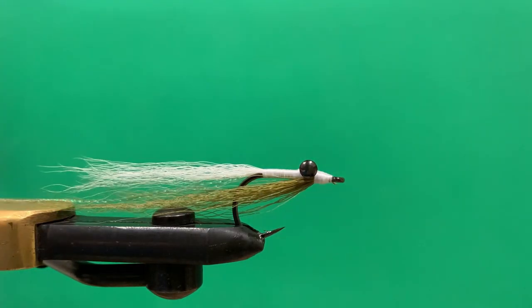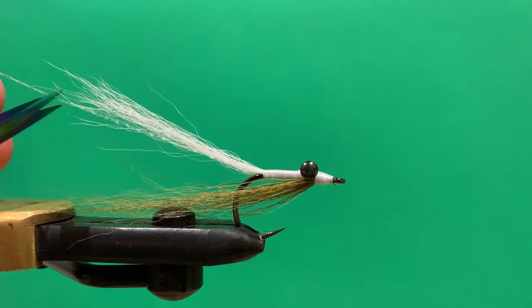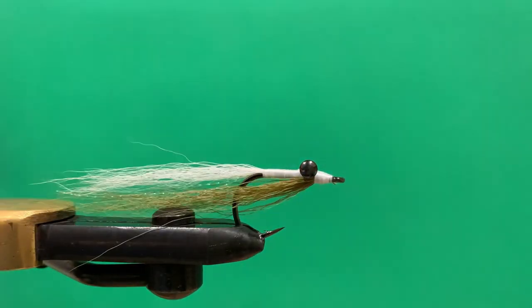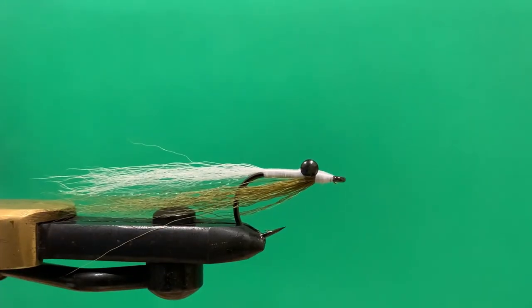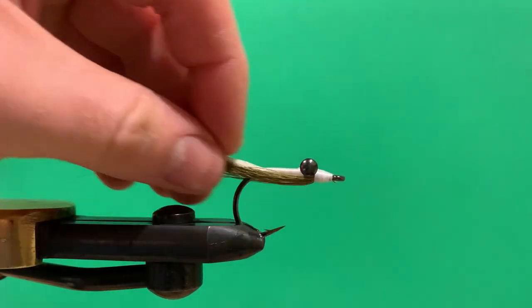The last thing is just to get your crystal flash here, move in, and cut it to length. That is your clouser minnow. Thanks for watching, and if you enjoyed it, please do like and subscribe.